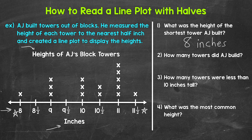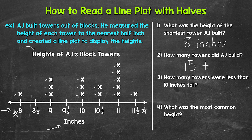Moving on to number two: how many towers did AJ build? For this, we need to count how many total X's are on the line plot, since each X represents a tower. Counting all of them: one, two, three, four, five, six, seven, eight, nine, ten, eleven, twelve, thirteen, fourteen, fifteen. So how many towers did AJ build? Fifteen towers.